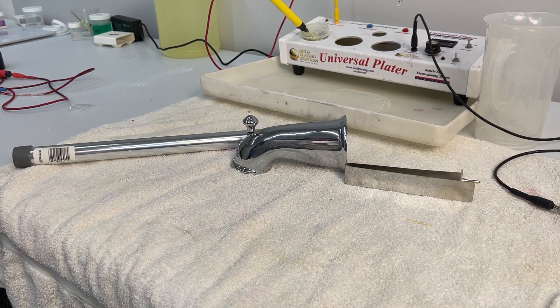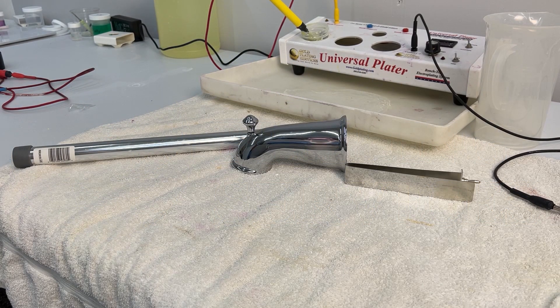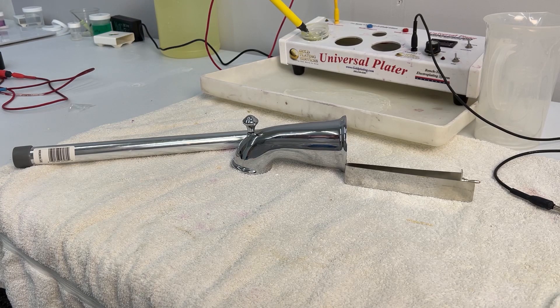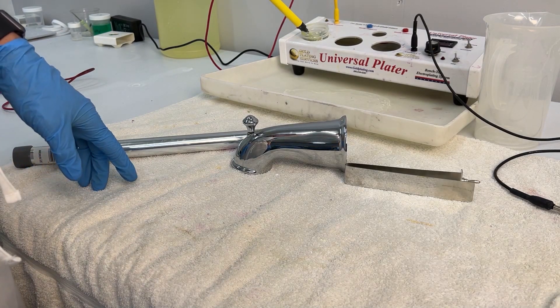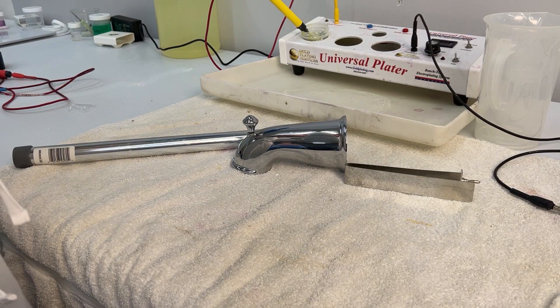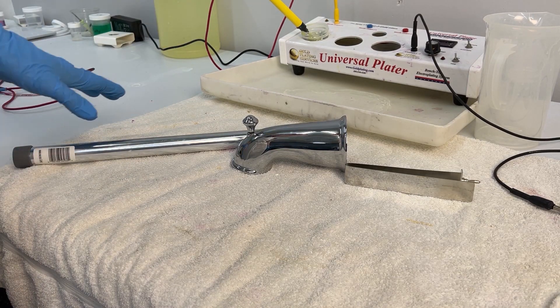What is up everybody? Golden Holden here and today we are going to be talking a little bit about our chrome stripper and how you can tell something is chrome plated on different parts and we'll be using our universal chrome machine to be testing all of this.